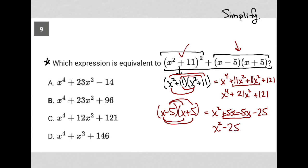Now for the combination. I'm going to just circle things that I think are like terms. So x to the fourth power does not have a like term, so it will come down here by itself. I have a positive 22x squared plus an x squared. So that's a positive 23x squared. And then I have a positive 121 minus 25, which is positive 96. Therefore, choice B is the correct answer.